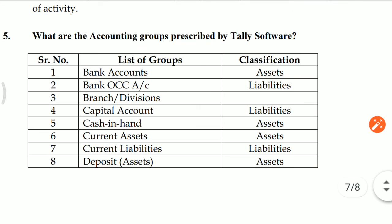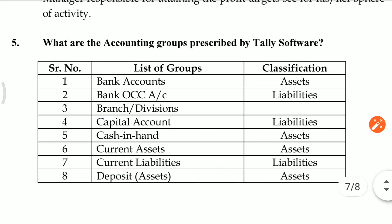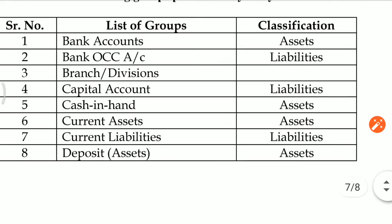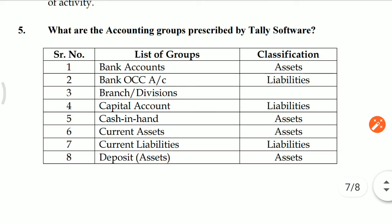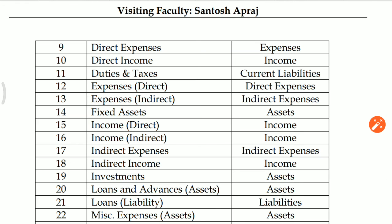Question number five: Tally has allocated a proper classification of groups. Bank Accounts are disclosed on the asset side. Bank Overdraft/Cash Credit Account is on the liability side. Capital Account is always on the liability side (unless debit balance, then asset side). Cash in Hand is always on the asset side. Current Assets are always on the asset side. Current Liabilities are always on the liability side. Deposits are always on the asset side. Direct Expenses are on the expense side. Direct Income is on the income side. Duties and Taxes (GST and TDS) are always in current liabilities.